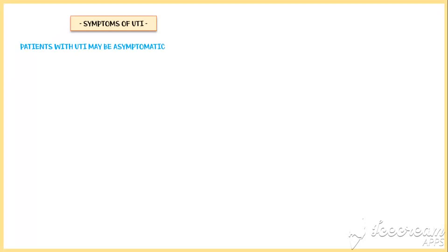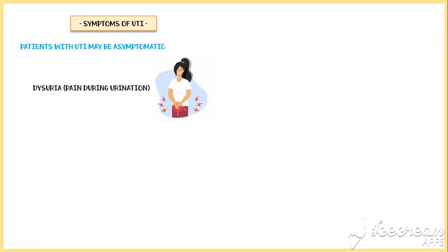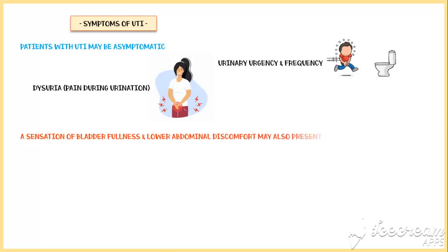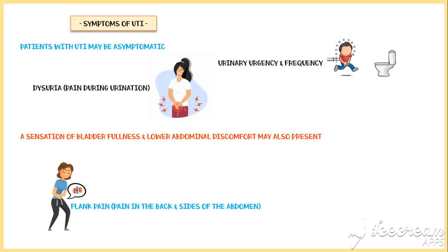Now let's look at the symptoms of urinary tract infection. Patients with urinary tract infections may be asymptomatic. If present, the most common symptom is dysuria, or pain during urination, accompanied by urinary urgency and frequency. A sensation of bladder fullness and lower abdominal discomfort may also be present. Most often, patients experience pain in the sides and back of the abdomen, which is called flank pain.